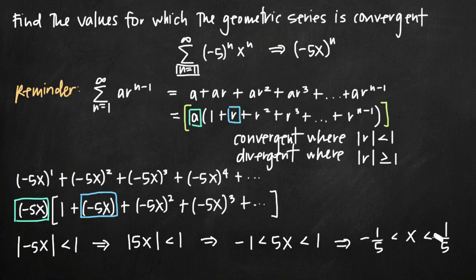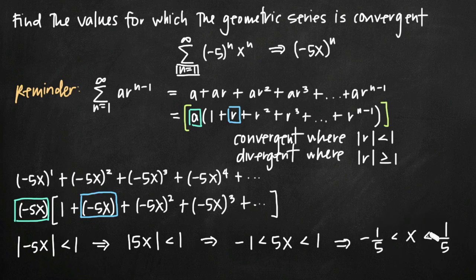The series is convergent for all values of x between negative 1 fifth and positive 1 fifth — that is, greater than negative 1 fifth and less than positive 1 fifth. Outside that interval, if x is less than negative 1 fifth or greater than positive 1 fifth, the series is divergent. Within this interval, the series is convergent.